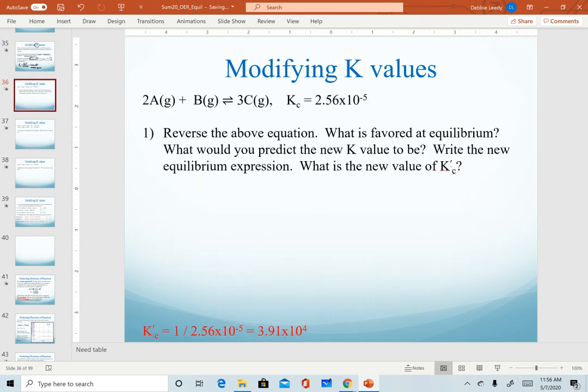Using that as our starting point, let's talk about what would happen if we were to reverse the above equation. So when I do that, now it means that C is my reactant and A and B, 2A and B are my products.